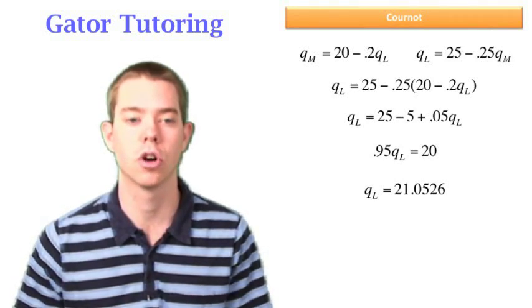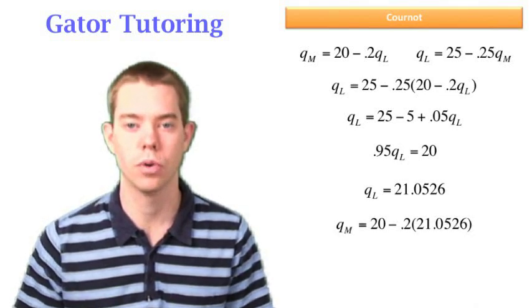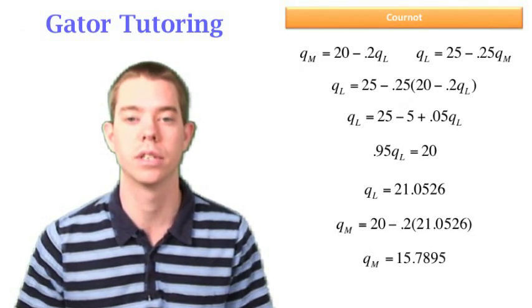So solving for QM is pretty easy. We just go back up to Matt's reaction function, plugging in what we found for QL. And we see that QM is equal to 15.7895.